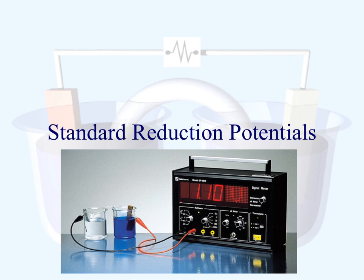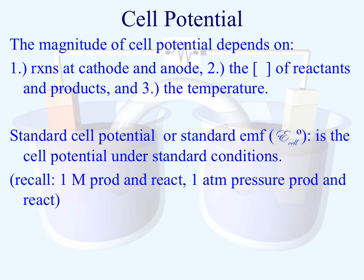Let's go ahead and look at standard reduction potentials and their calculations. What determines the cell's potential? The magnitude of the cell is going to depend on several factors: the reactions that are occurring at the anode and cathode, their specific properties, the concentrations of the reactants and products, and the temperature.